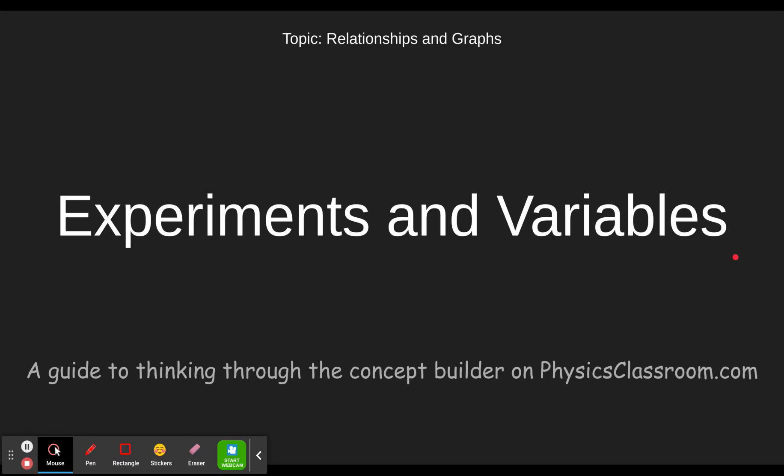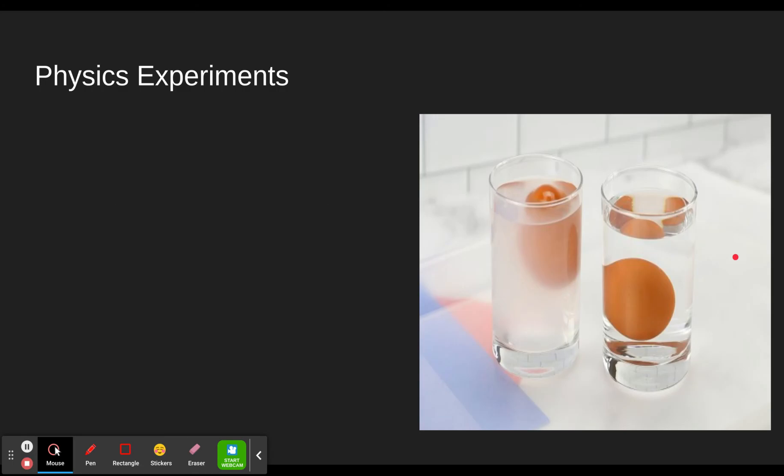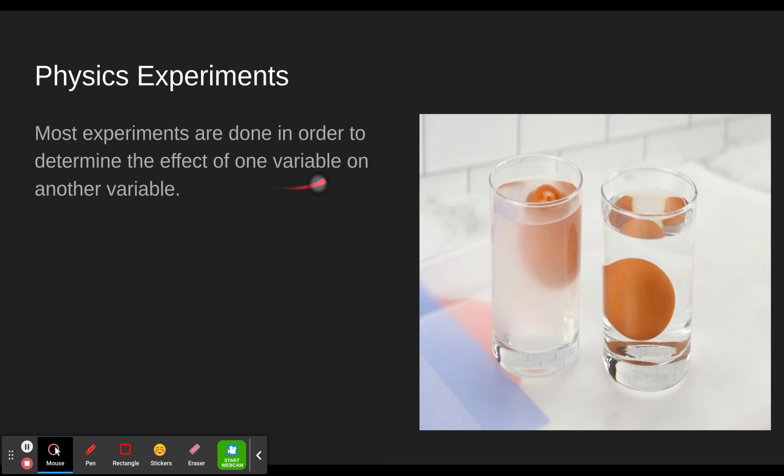So today we're going to be looking at how to design an experiment, how to write about an experiment, and how to record your data or review your data. First of all, experiments. Most experiments are done in order to determine the effect of one variable on another variable. Well before we can understand that definition completely, let's make sure we know what a variable is. A variable is a quantity whose value can change, something like distance.